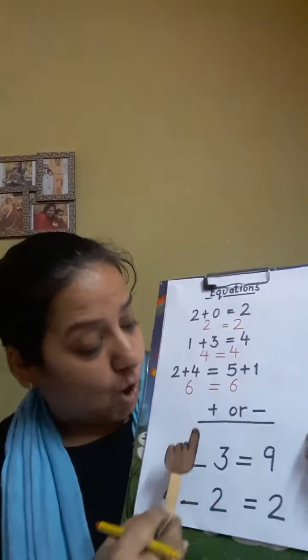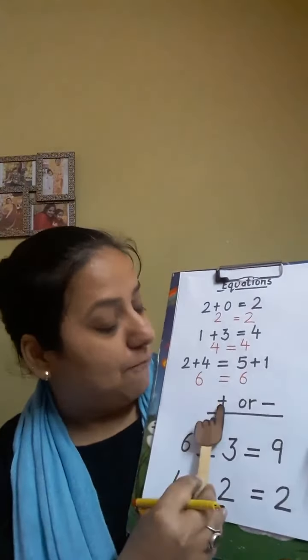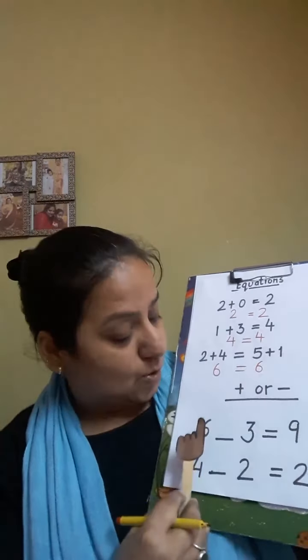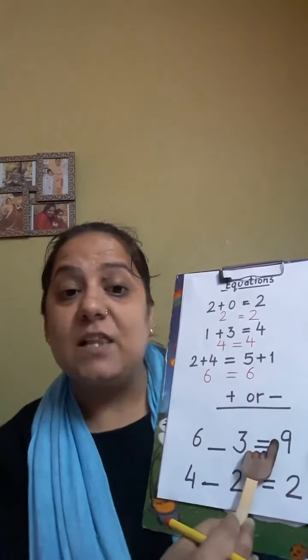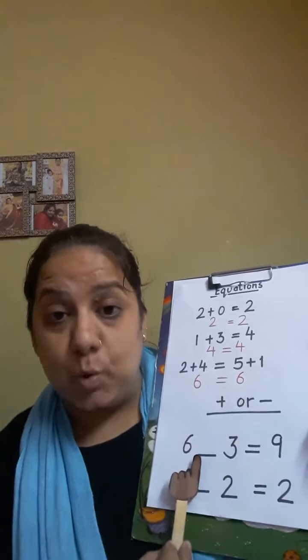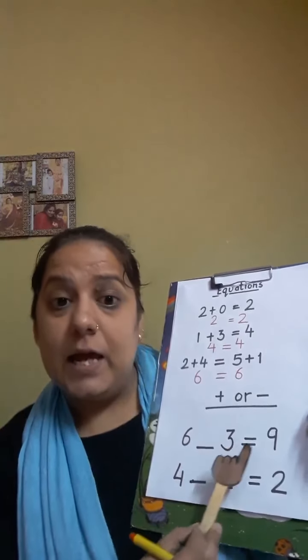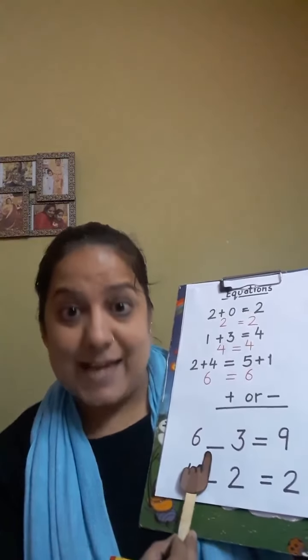Now let's solve these two equations with the help of plus or minus. So we have to put a sign here to make the value equal both the sides. 6 dash 3 equals to 9. So what are we going to put here? Yes, we are going to put plus.